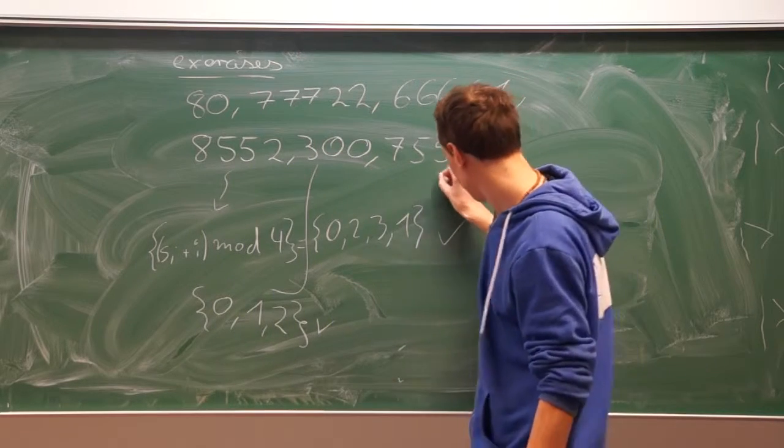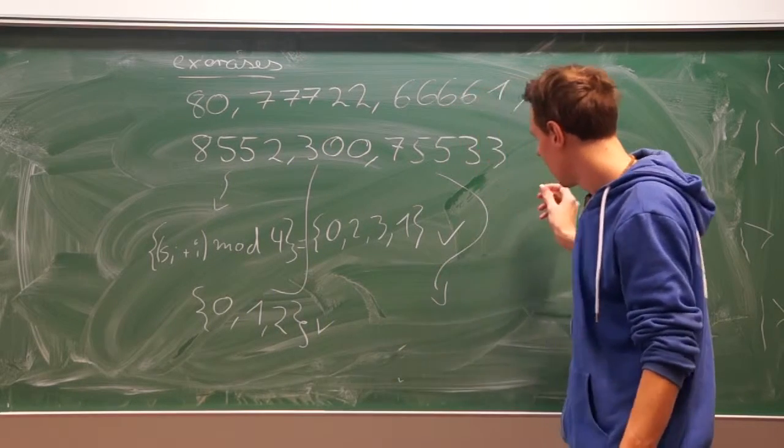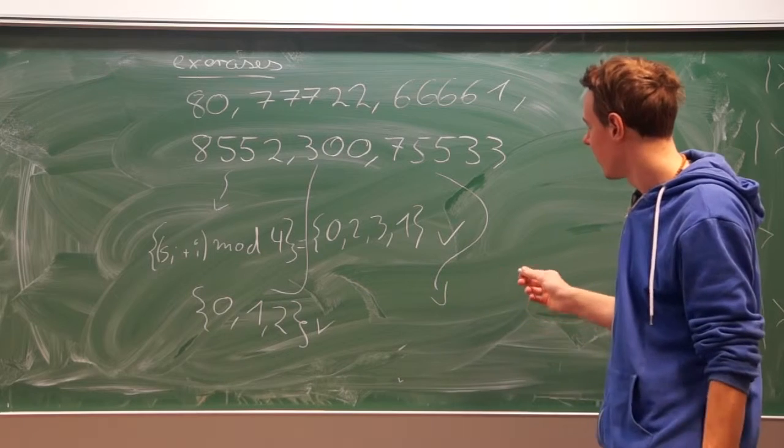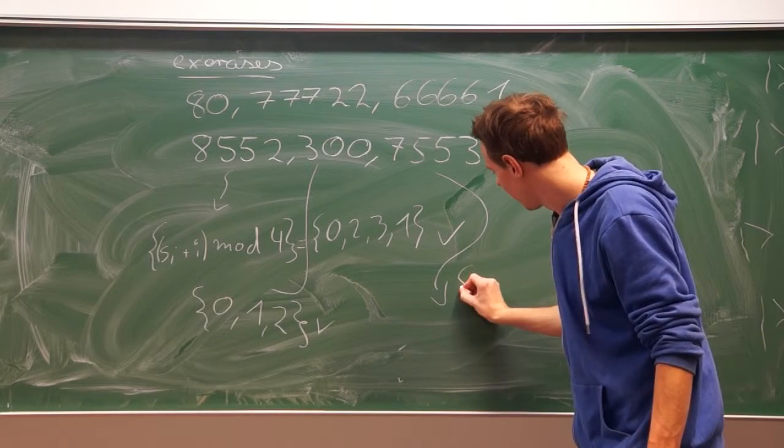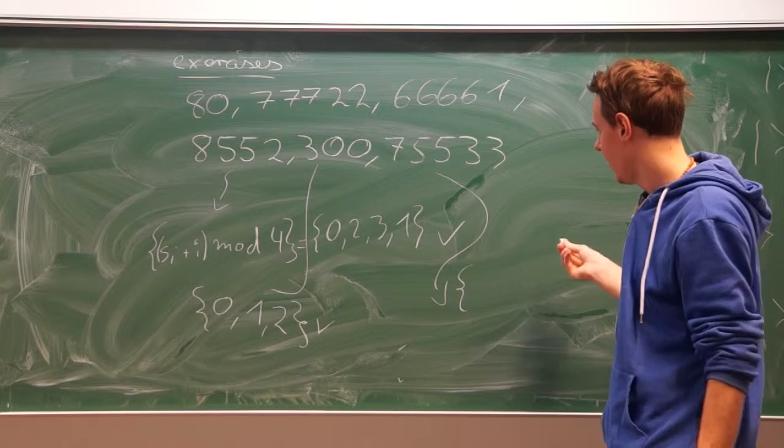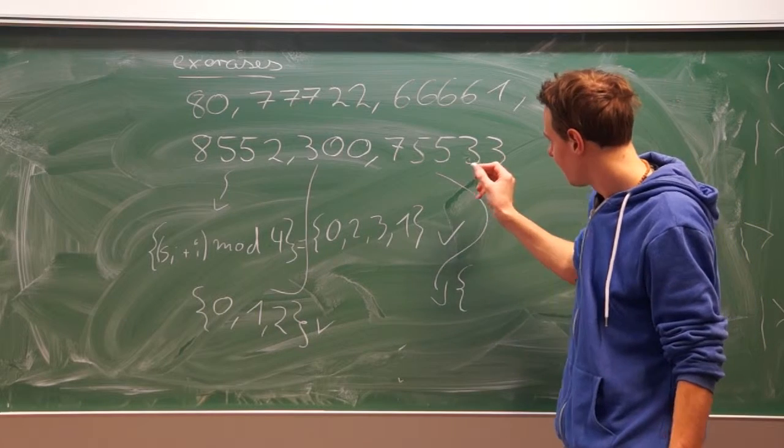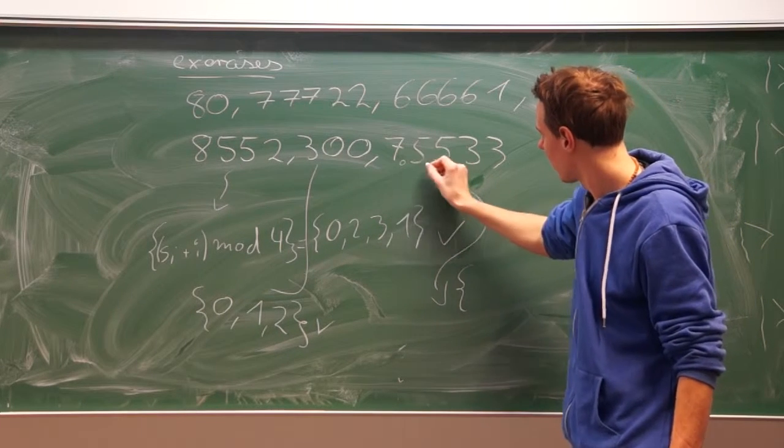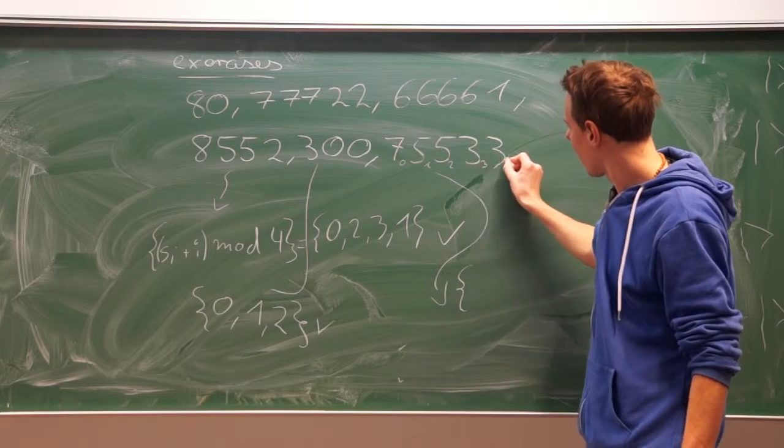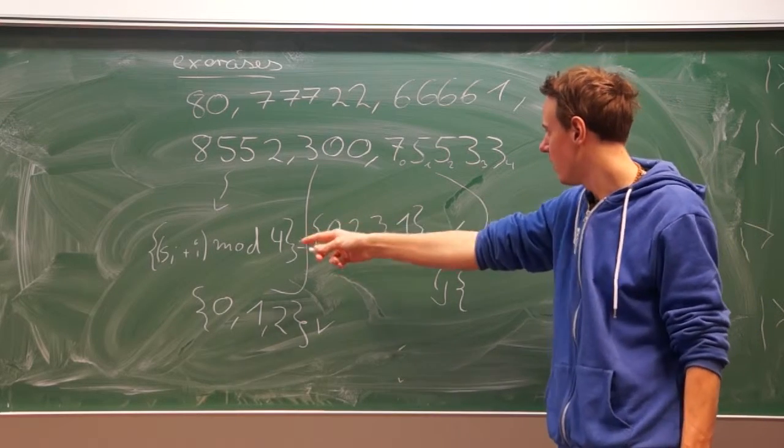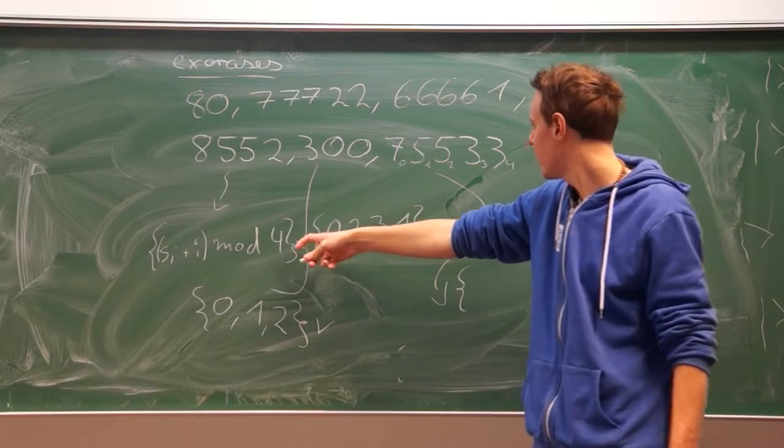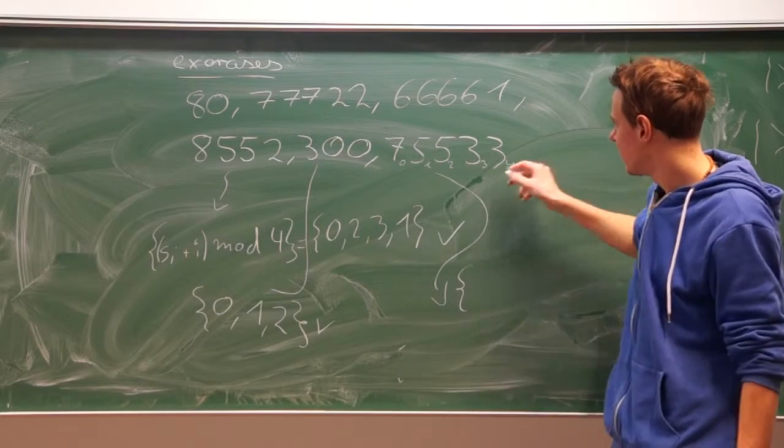And the last one here. That's a more complicated one. I think this is going to turn out false. Because I build up the same set like here but with another period, right? My period here is five.